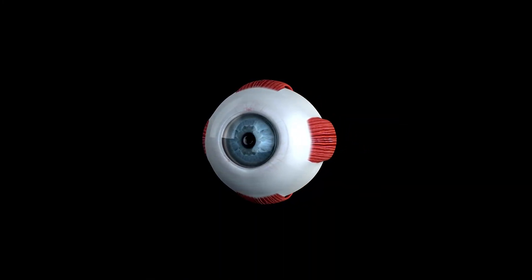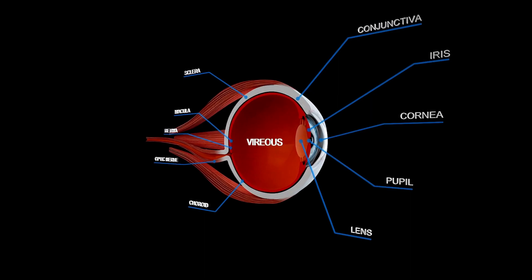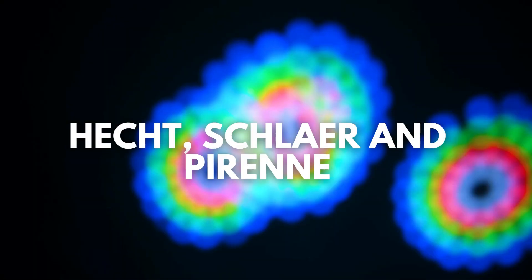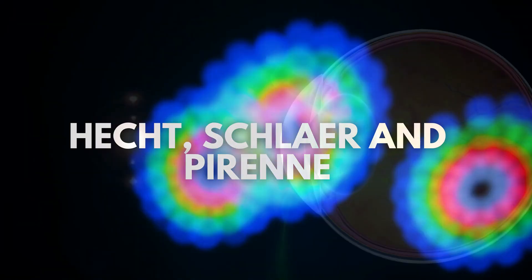It is possible to test our visual sensitivity using a very low-level light source in a dark room. Such an experiment was first done successfully by Hecht, Schleyer, and Pyrenne in 1942.